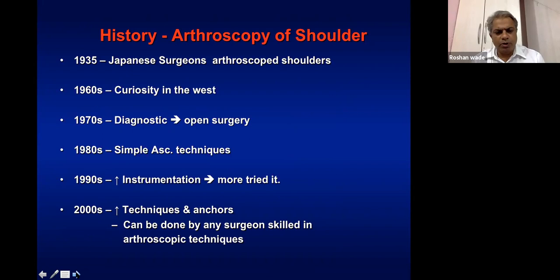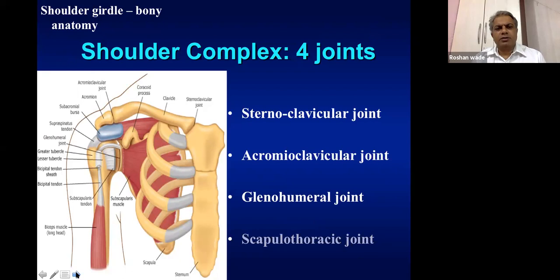The Y2K year was a very important landmark in shoulder arthroscopy development worldwide. As many senior authors have said, anatomy is what is required when you want to address pathological issues — 90% anatomy and 10% common sense makes a complete orthopedic surgeon. The shoulder girdle bony anatomy is very important: there are four joints — sternoclavicular, acromioclavicular, glenohumeral, and scapulothoracic.